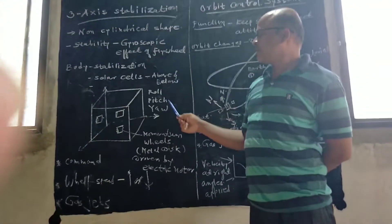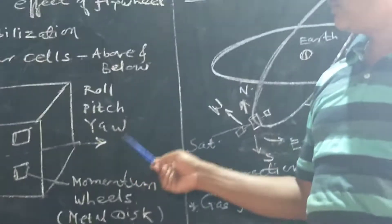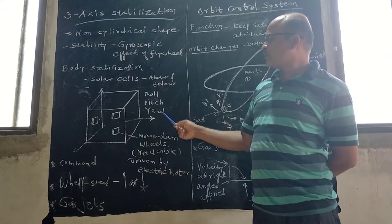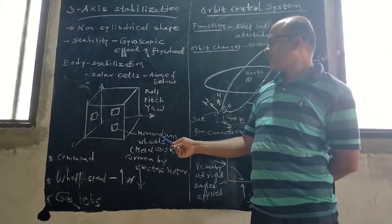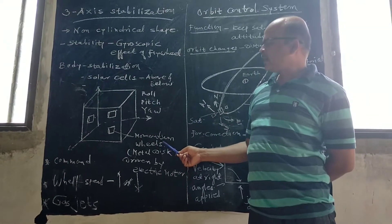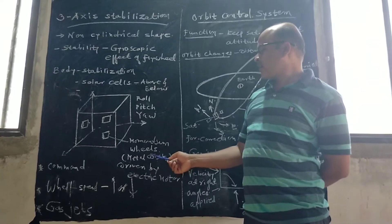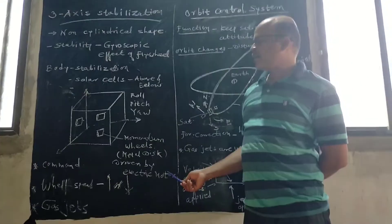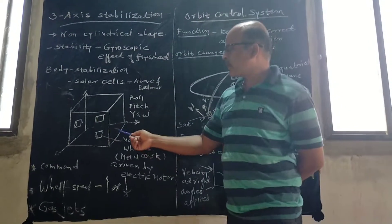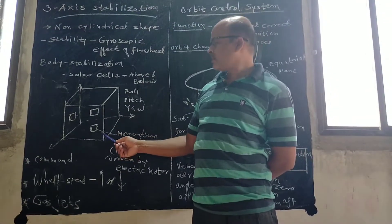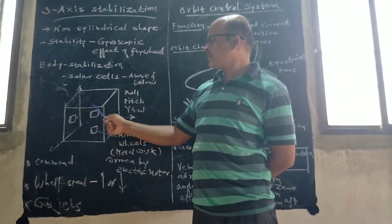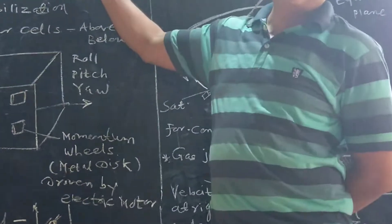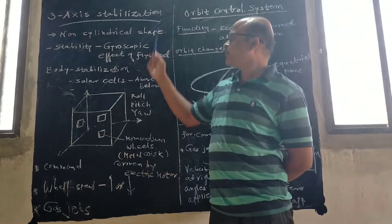Then next is, as mentioned, three-axis stabilization. Satellite consists of three-axis, roll-axis, pitch-axis, and yaw-axis. And along this roll-pitch-yaw-axis, generally, momentum wheels are provided. And these momentum wheels are made up of metal disks, driven by electric motor. And these momentum wheels are rotated with the help of gas jets. These momentum wheels are rotated, and satellites three-axis are stabilized, therefore, name given as three-axis stabilization.